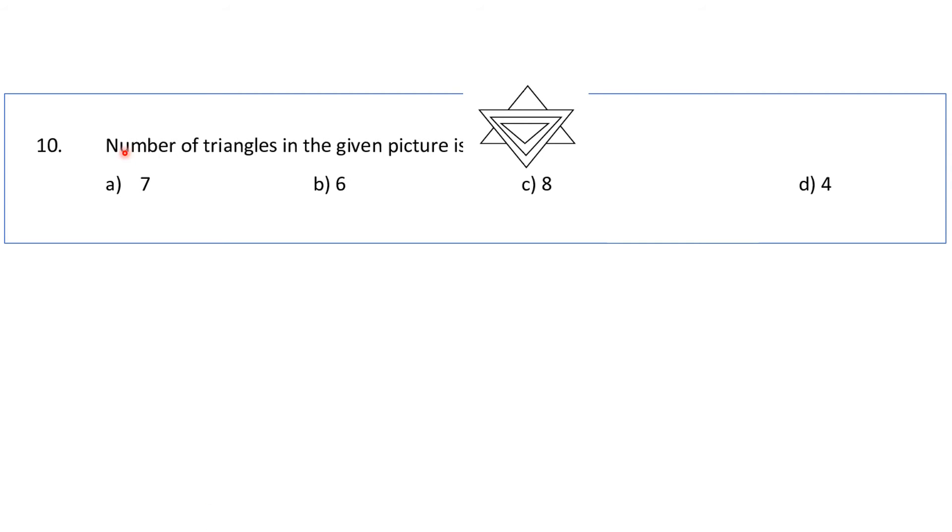Next question: count the number of triangles given in the picture. We have to count the number of triangles. You have to take care - you don't have to imagine anything. Whatever you are seeing, you have to tell about that only. So 1 triangle, 2 triangles, 3 triangles. We don't have to assume that this is a complete triangle. If you observe closely, these are 3 smaller triangles. So total there are 1, 2, 3, 4, 5, 6 triangles in total. So answer will be 6.